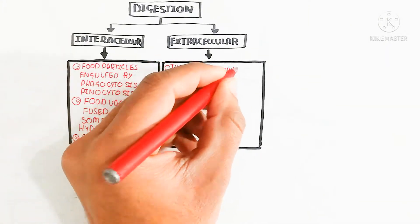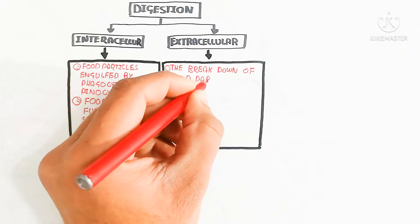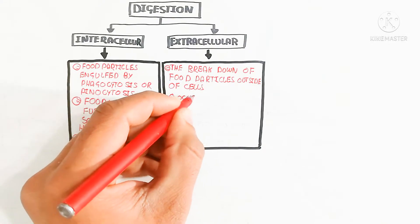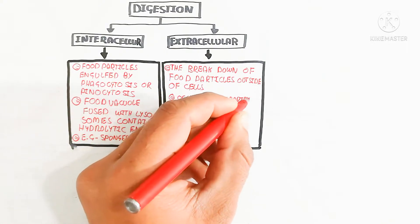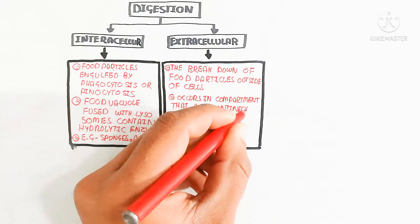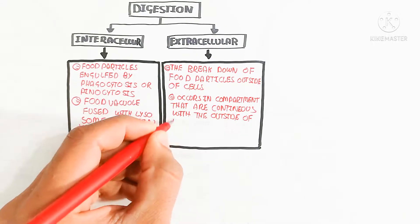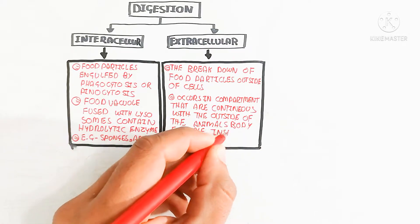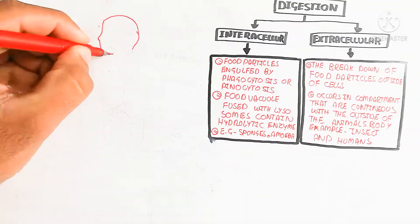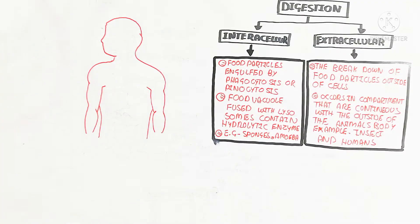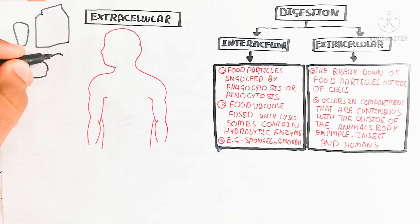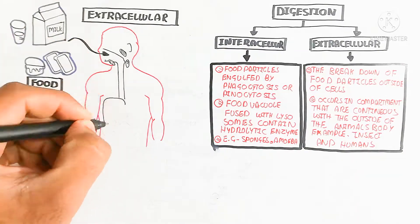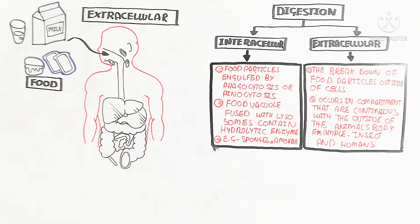Humans also use intracellular digestion. Extracellular digestion is basically the breakdown of food particles outside of cells, occurring in compartments that are continuous with the outside of the animal's body. Examples include insects and humans, because humans contain a digestive tract — the gastrointestinal tract — which through evolutionary process is essentially invaginated from the outside.